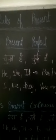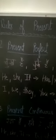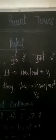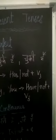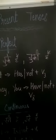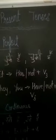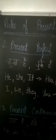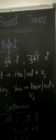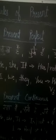Now the second is present perfect. In present perfect, there are endings like 'chuka hai', 'chuke hain', 'chuki hai' — meaning 'has done' or 'have done'. The rule is: with he, she, it, use 'has' or 'has not' plus the third form of the verb. With I, we, they, and you, use 'have' or 'have not' plus the third form of the verb.